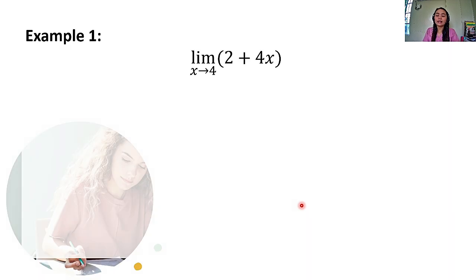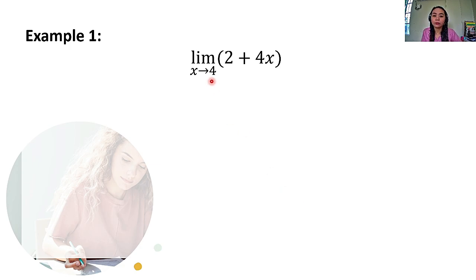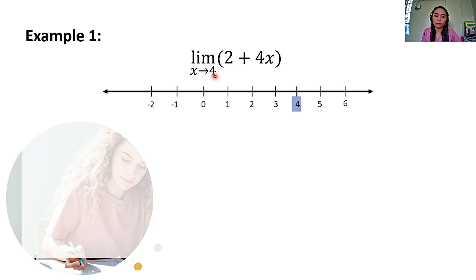So, class, the first thing that we have to do is to construct the table of values, but before that, ilocate muna natin yung constant natin, which is 4 sa number line. So, nagdraw tayo ng number line. Nandito yung ating 4, and the number line extends to both directions.